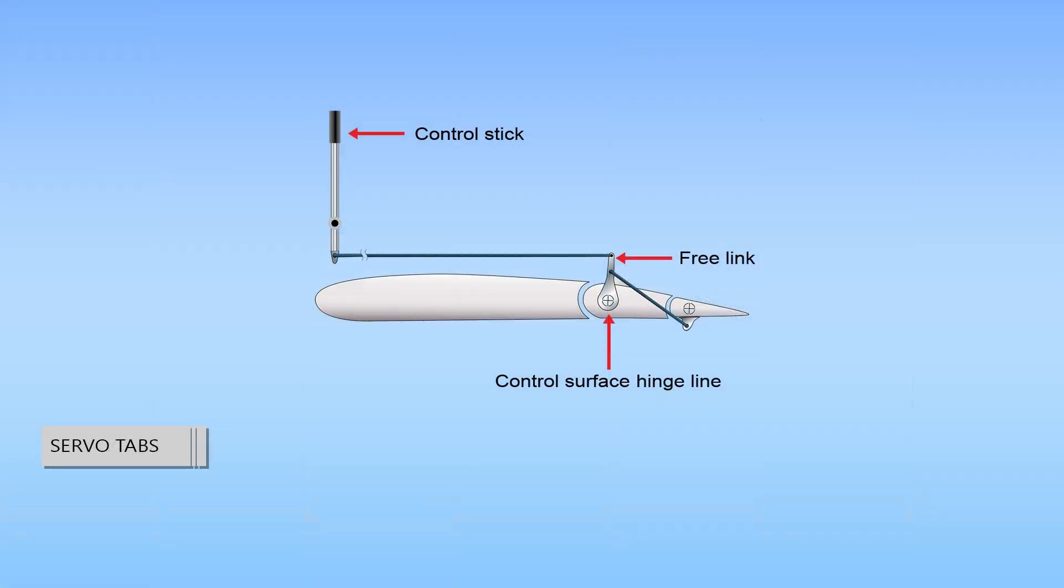Servo tabs are very similar in operation and appearance to the trim tabs. A servo tab is a small portion of a flight control surface that deploys in such a way that it helps to move the entire flight control surface in the direction that the pilot wishes it to go. A servo tab is a dynamic device that deploys to decrease the pilot's workload and destabilize the aircraft.